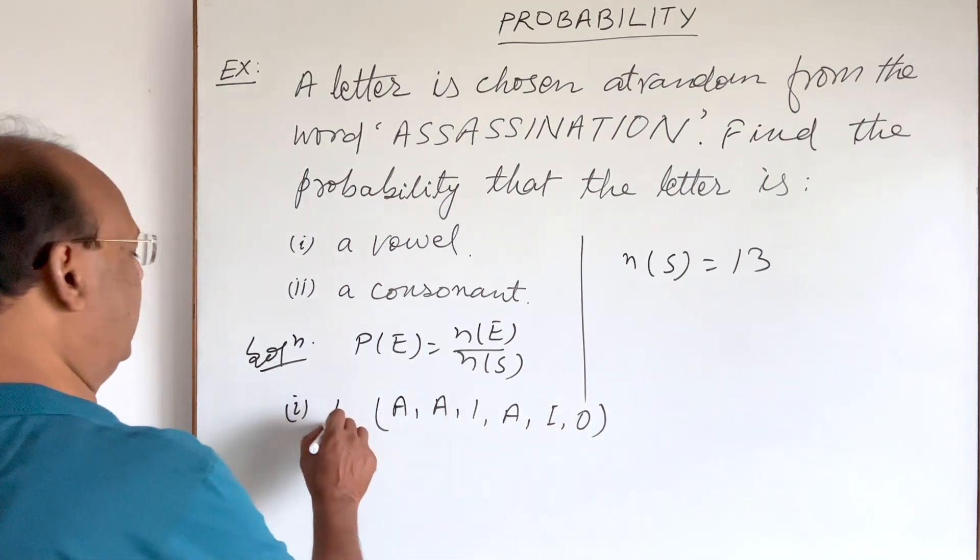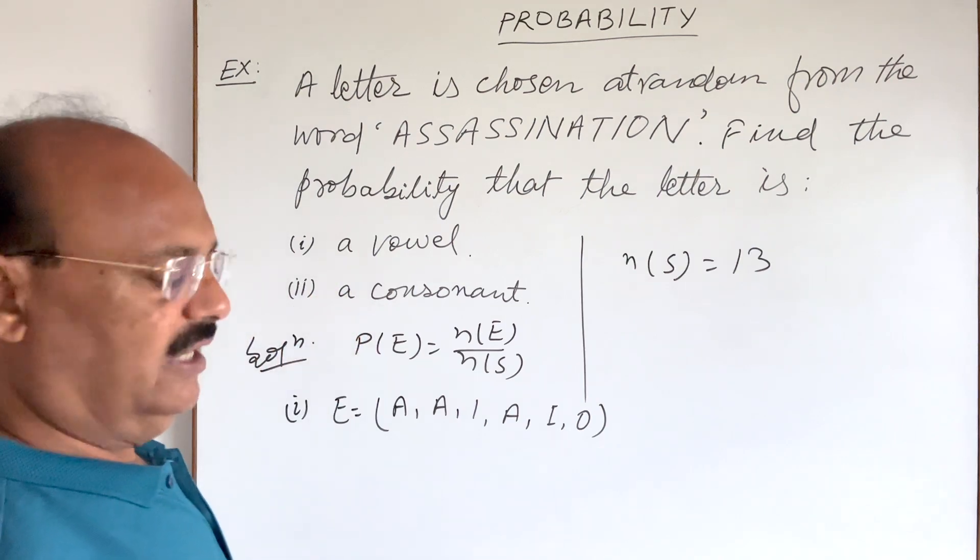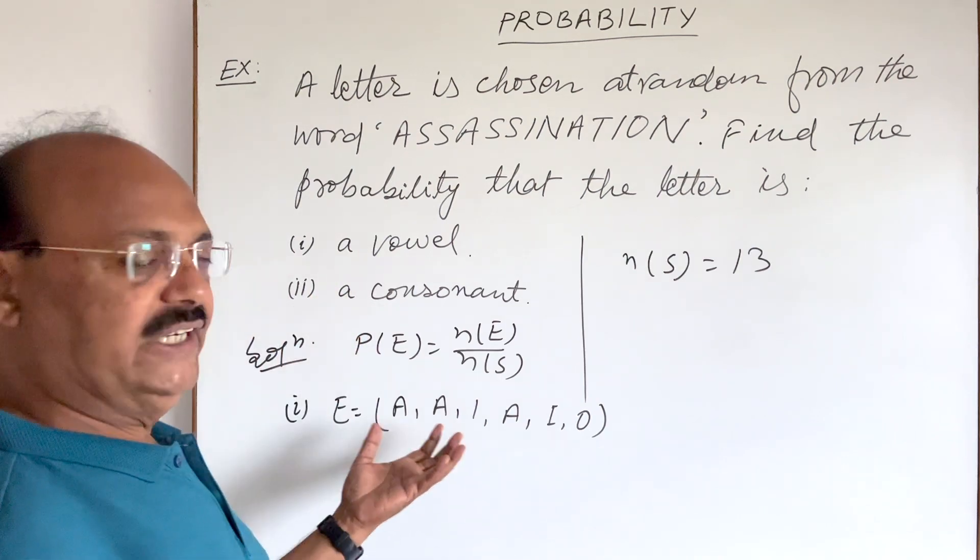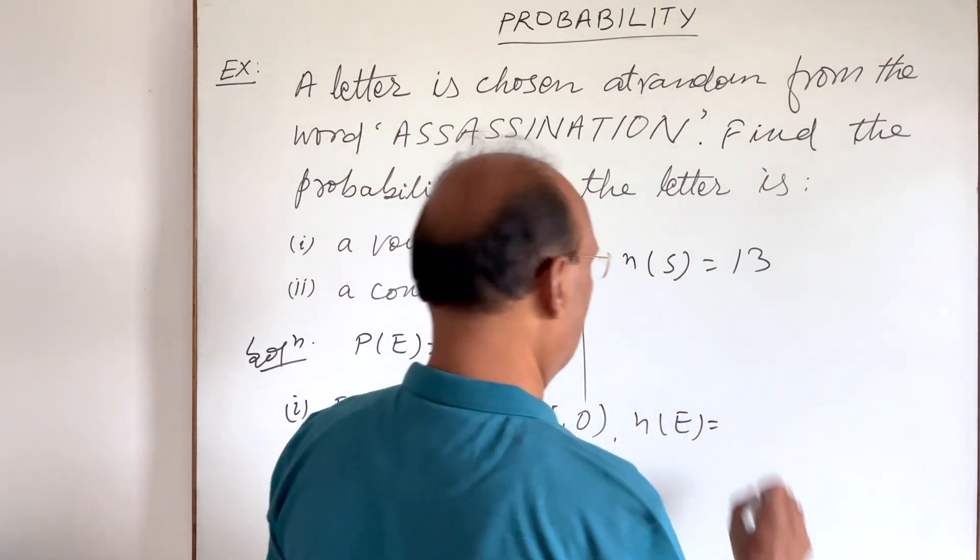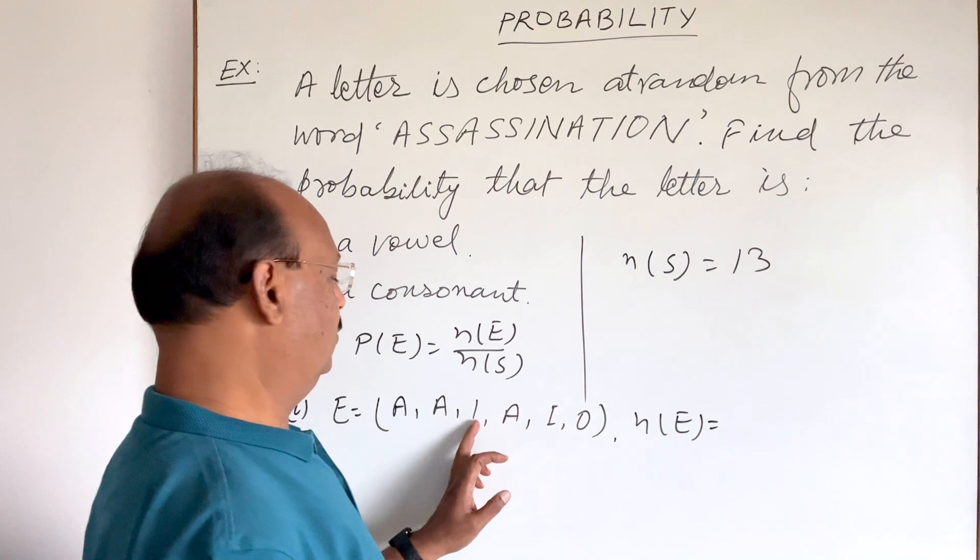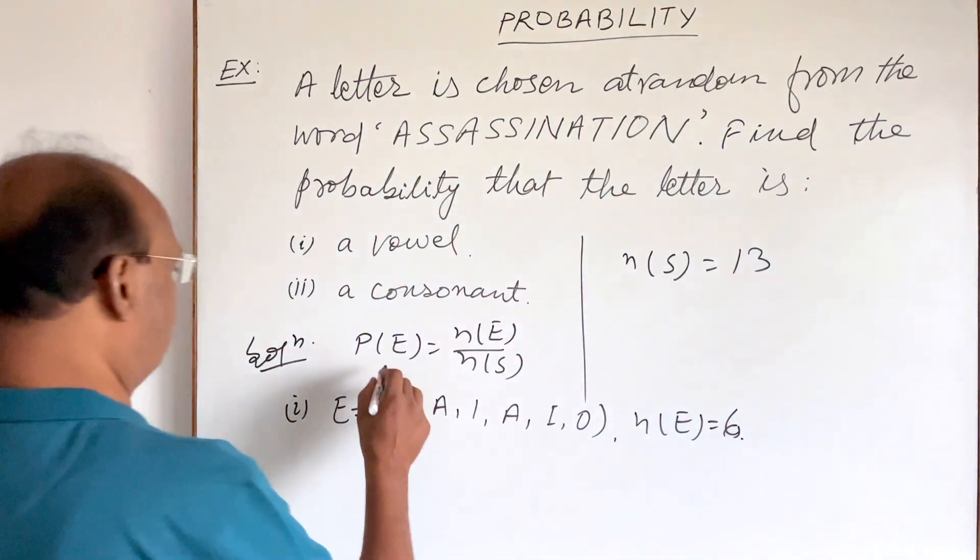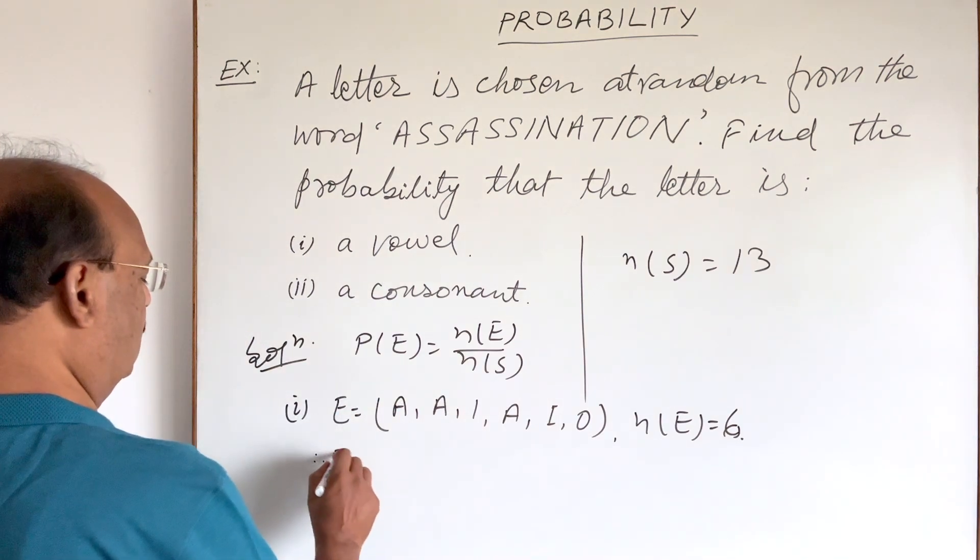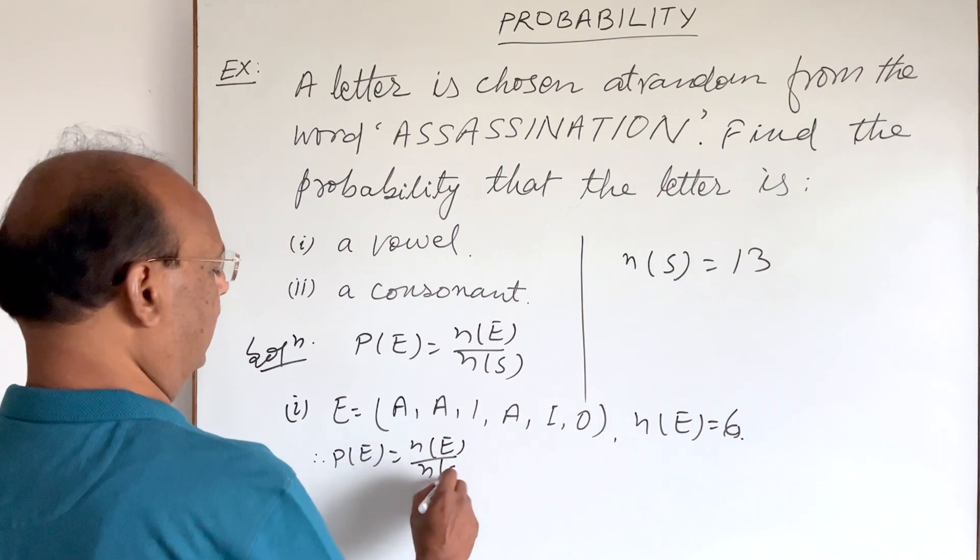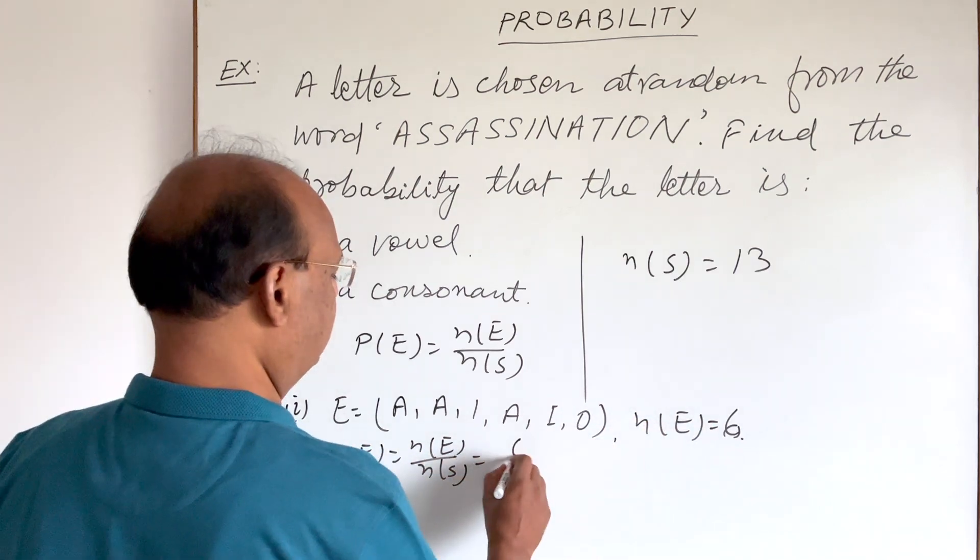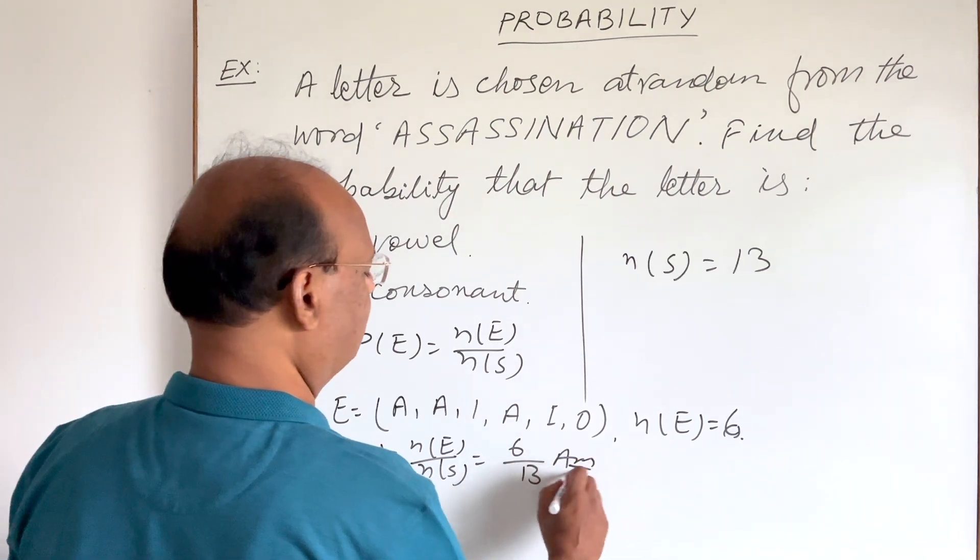This is our desirable event. In this first case, when we have to select a vowel and find the probability of selecting a vowel, n(E) will be 1, 2, 3, 4, 5, 6. This is 6. We will use this formula here. Therefore, probability of E is equal to n(E) divided by n(S). n(E) is 6 and n(S) is 13. This is the answer.